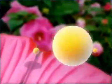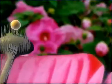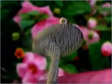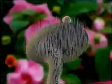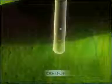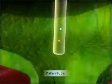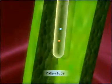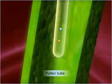On reaching the stigma, the pollen grain containing two nuclei germinates to produce the pollen tube. The pollen tube grows down into the style, deriving nutrition from it.